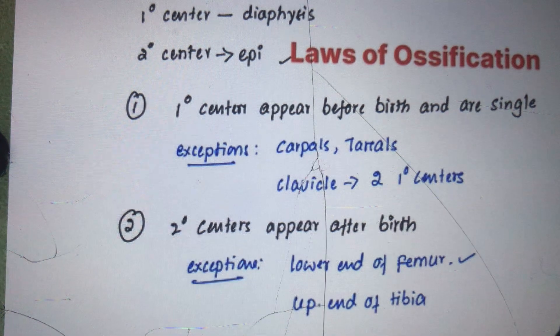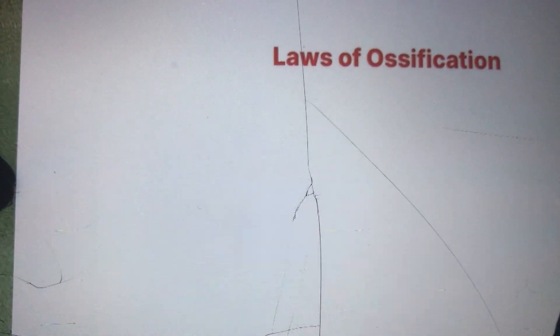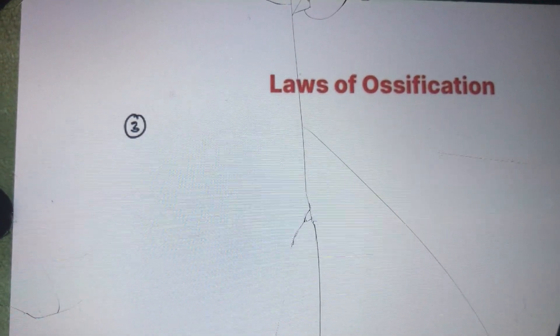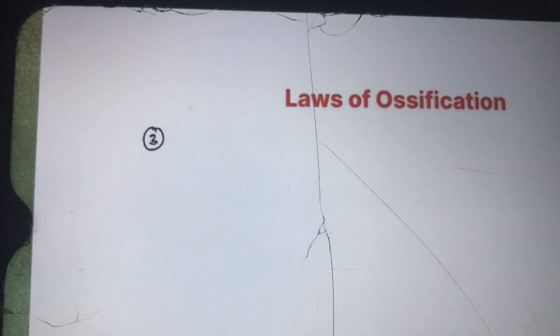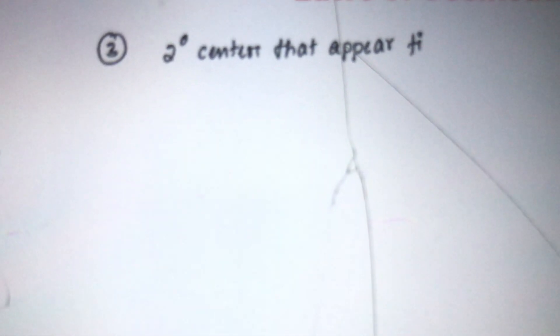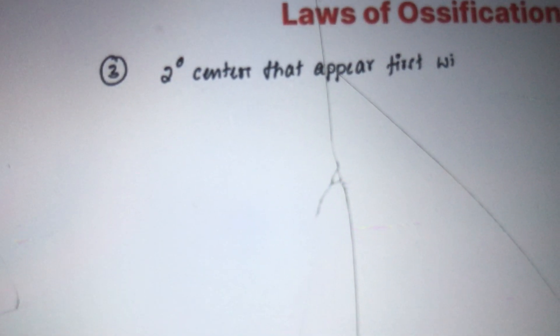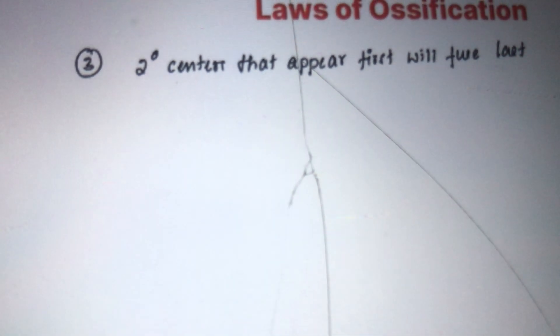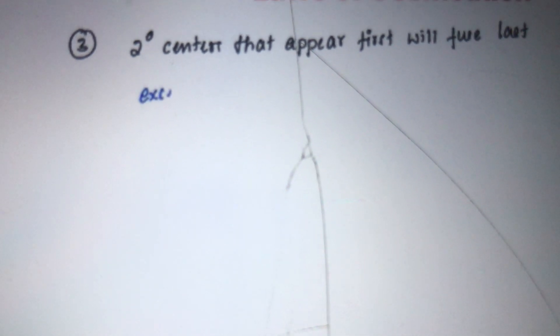The third law of ossification states that secondary centers that appear first will always fuse last. The exception to this rule is the fibula.